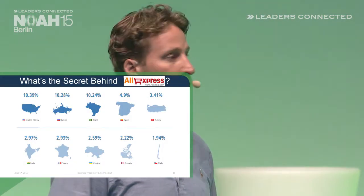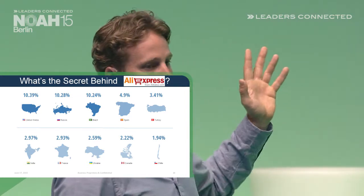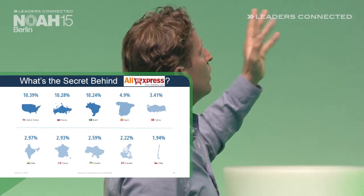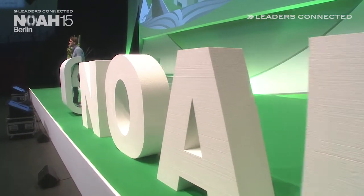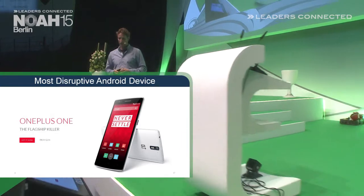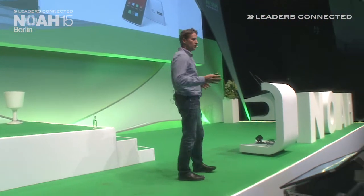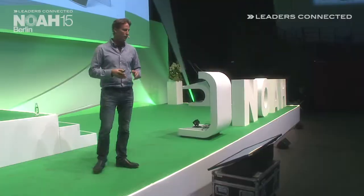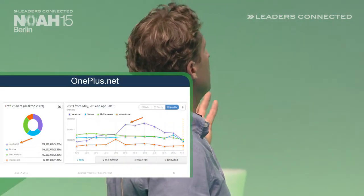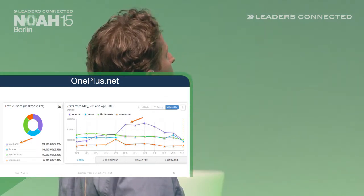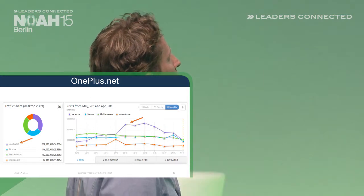It seems like it's working for them. The interesting thing is that their presence is really spread around the globe — you can see from the United States to Russia, the chart shows which countries are visiting AliExpress and it's very spread. The second example from China is the company that manufactures the OnePlus phone, trying to compete with HTC and Motorola. They launched last year, and in this graph you can see how their website traffic at OnePlus.net increased dramatically over the year, passing HTC, BlackBerry, Motorola, and all the other players.